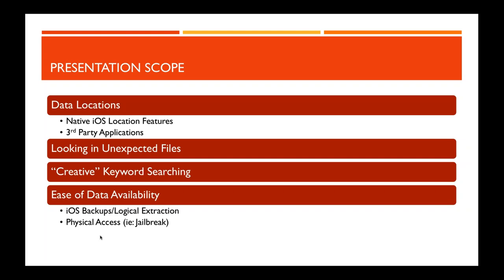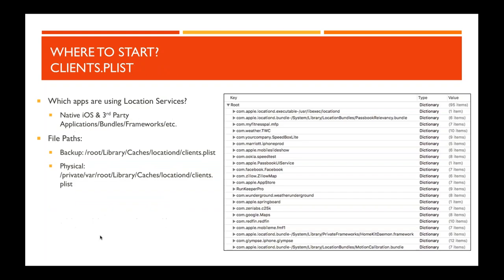So where do we start? There is a clients.plist file located in the private/var/root/Library/Caches/locationd directory. The file paths differ between a physical acquisition and an iOS backup. What this file contains is a list of bundle IDs — com.apple, com.weather.twc, com.facebook.facebook — each one representing a specific application or internal iOS framework. If we're curious whether a particular application has location services turned on, this is the first place to go.